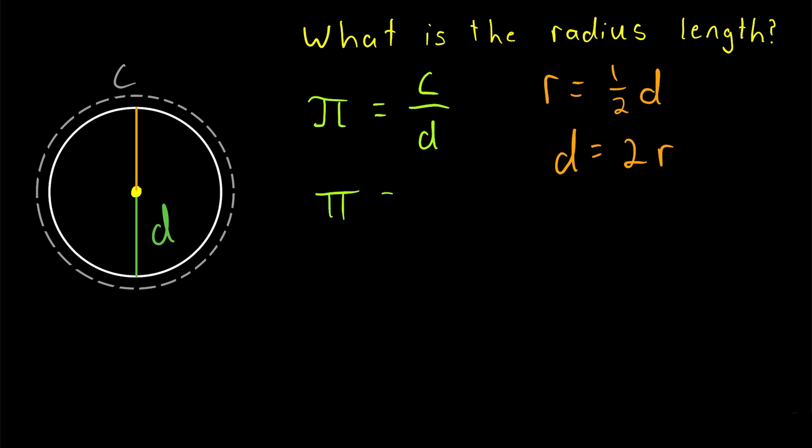So we have that pi is equal to the circumference divided by 2R. Remember, we want to get the radius R by itself. So for starters, let's divide both sides of the equation by C. That way the only variable we'll have over here is R.